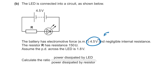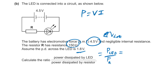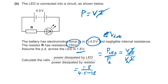Part B: the LED is in a circuit with EMF 4.5 V, resistor 150 Ω, and PD across the LED of 1.8 V. To find the ratio of power, we use P = VI. Since current is the same in series, the ratio of powers equals the ratio of voltages: 1.8 divided by (4.5 − 1.8) = 1.8 ÷ 2.7 = 0.67. The LED gets two-thirds of the power.